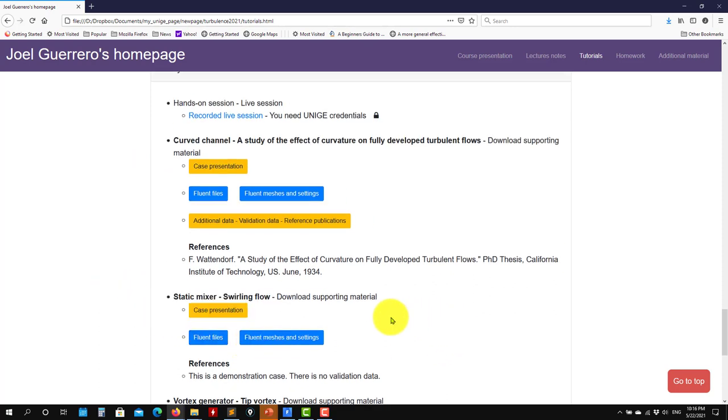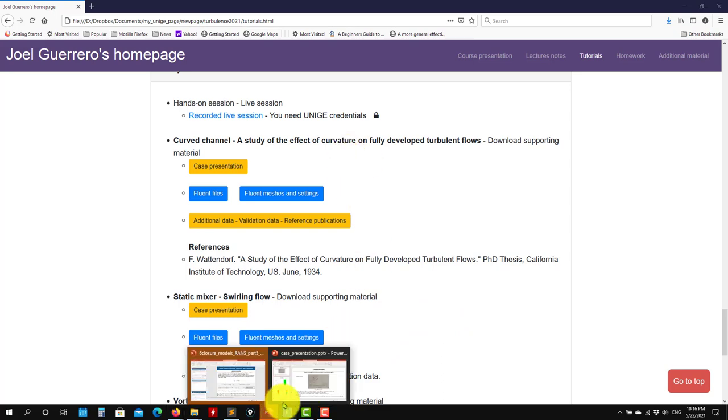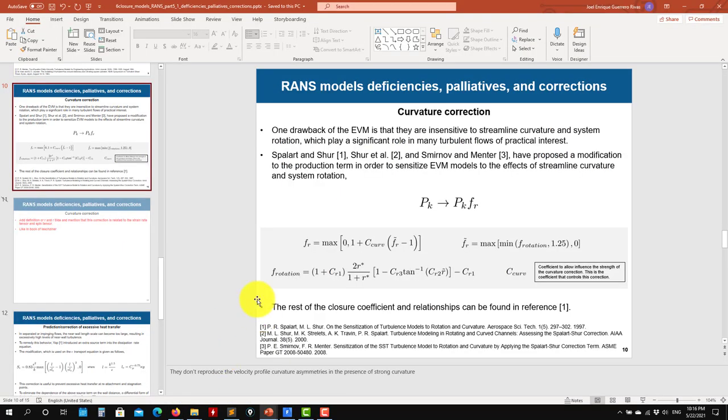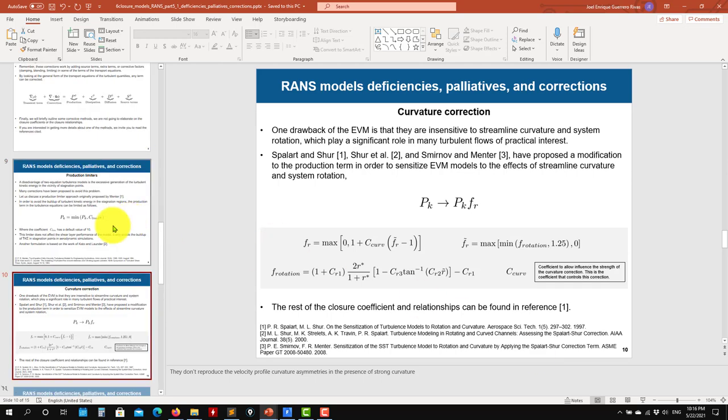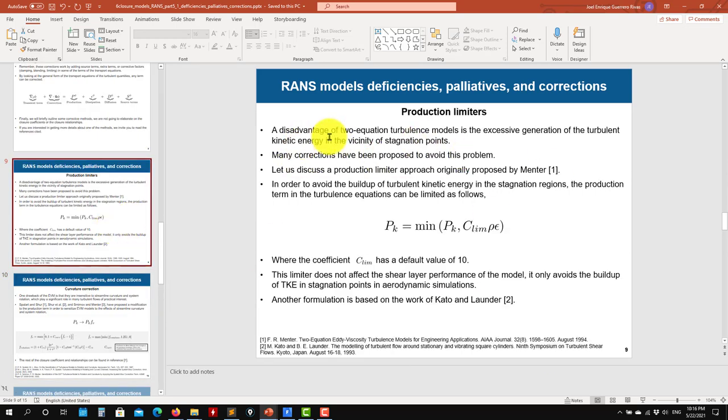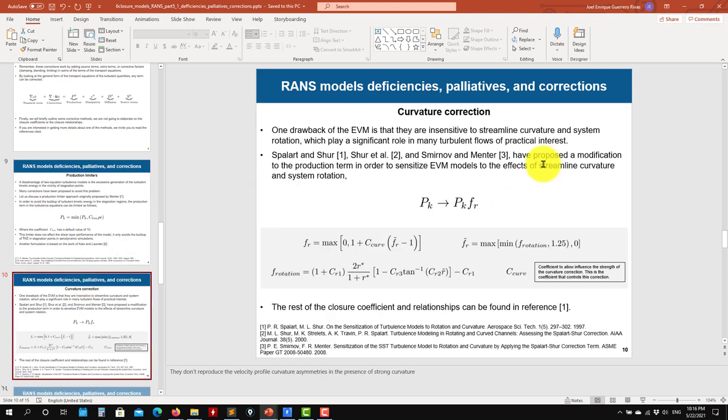Let's see what is about this case, but also remind you that in the material you will see that we address a little bit briefly the theory. So you have the production limiter, but also the curvature correction. And something important about this curvature correction.